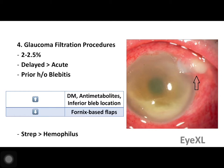A factor that decreases the risk of post-glaucoma filtration endophthalmitis is a fornix-based flap, as opposed to a limbal-based flap. The flap type is defined by the location of the base of the trapdoor created in the procedure. The most common organism in post-glaucoma filtration endophthalmitis is Streptococcus pneumoniae, followed by Haemophilus influenzae.